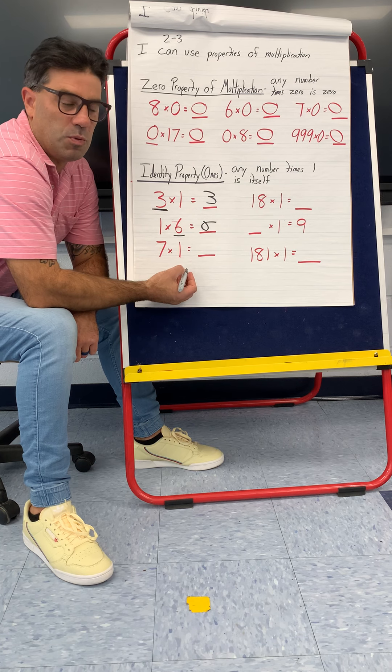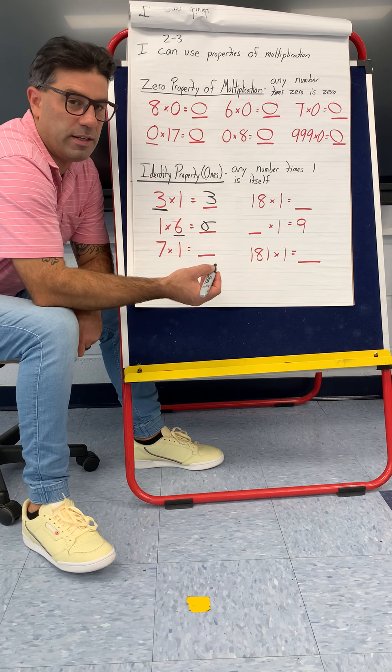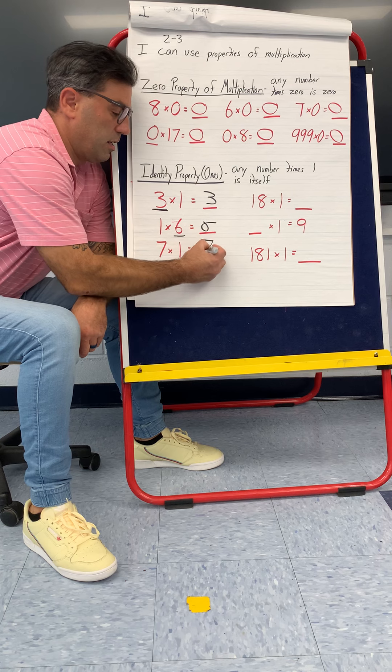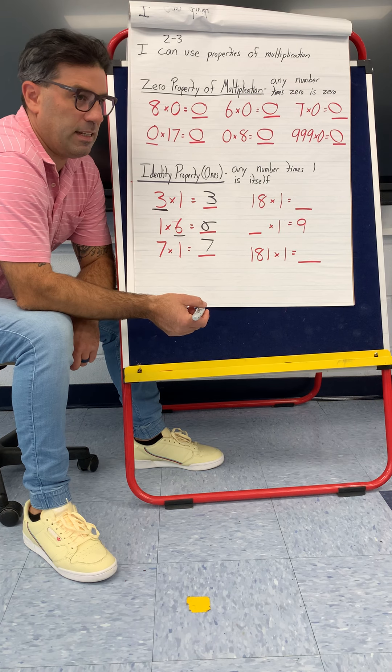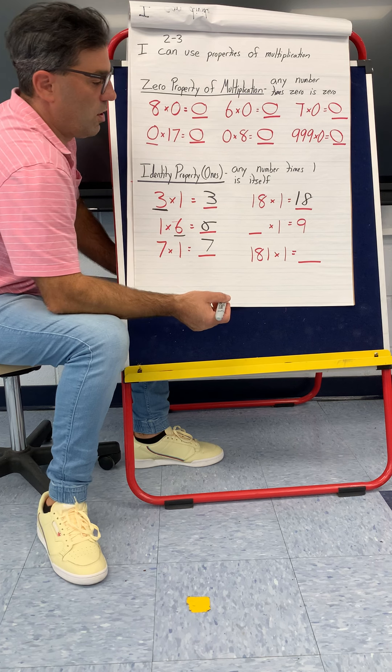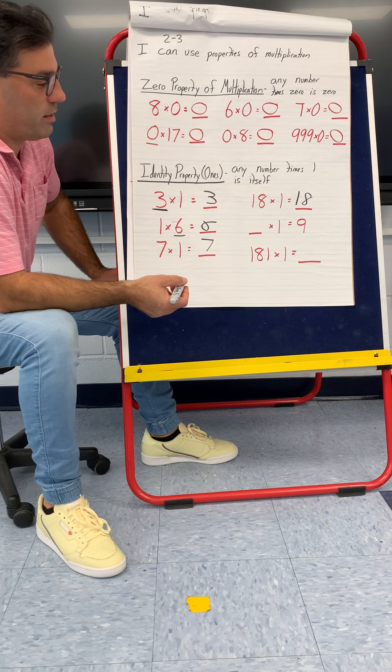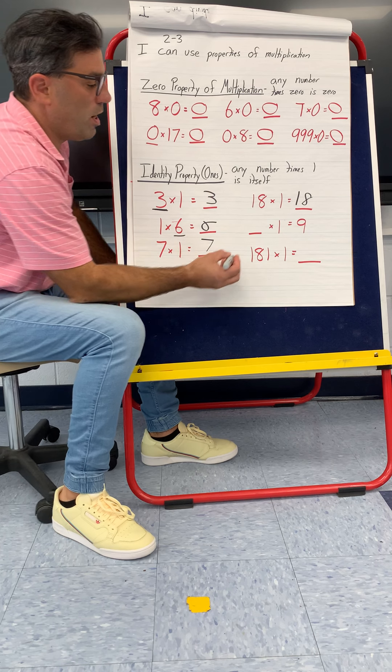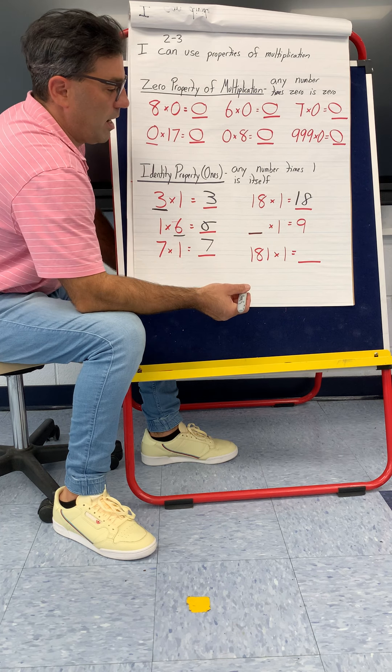Seven times one is seven, one time, so it's just seven. Eighteen times one is just the other number, eighteen.